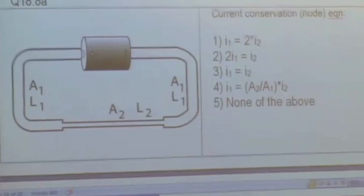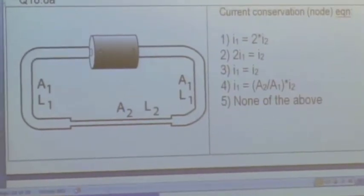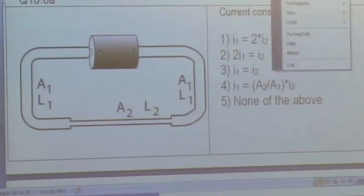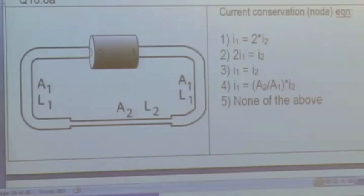So the basic strategy is start by writing down a node rule, start by writing and then write down the loop rule. In other words, current conservation and what amounts to energy conservation. And then see if you can solve the system for any unknowns that you're looking for. Let's start with the node rule.